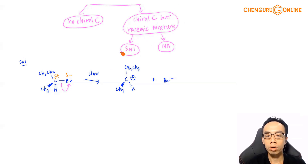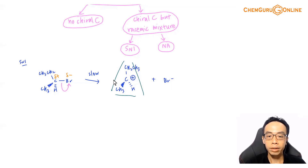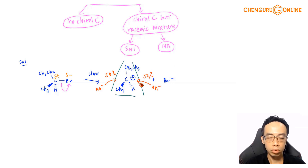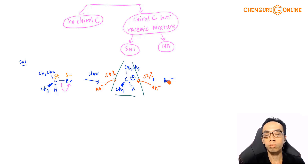We just need to appreciate that the carbocation is trigonal planar — it is flat — so both sides are equally exposed. In the second step, the nucleophile (OH-) can attack from the left 50% of the time and from the right 50% of the time. Because it is planar, we form a racemic mixture, which is optically inactive. An important distinction: SN1 gives a racemic mixture (optically inactive), whereas SN2 gives a pure sample and the product with a chiral carbon is optically active.